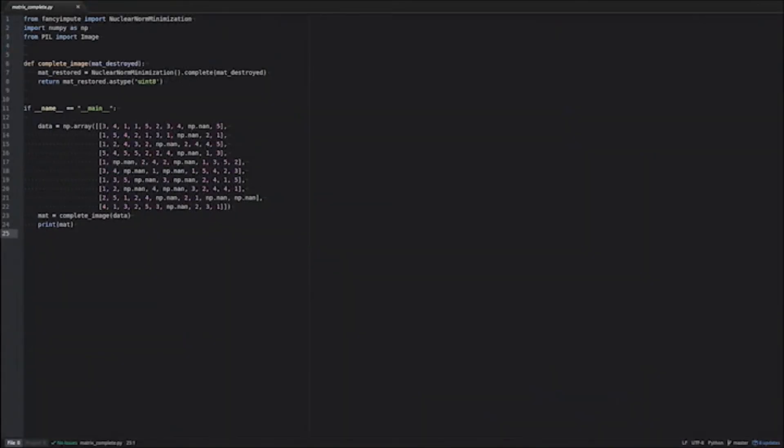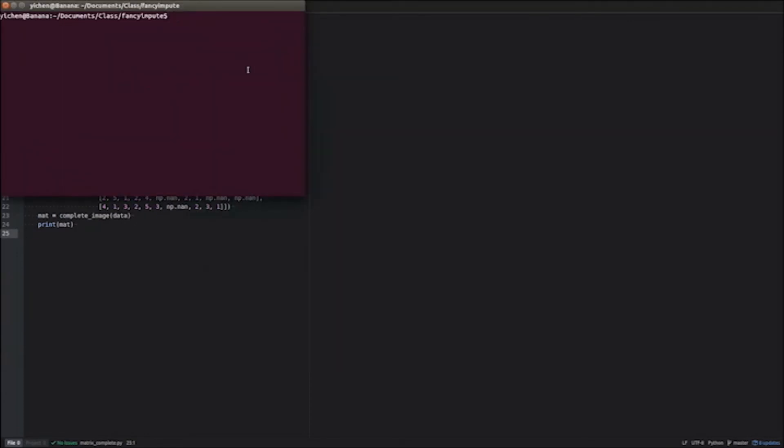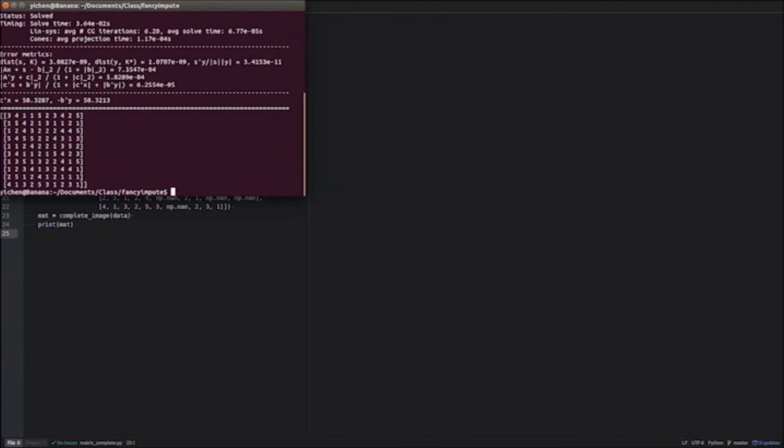And here is our matrix, the movie rating matrix in Python numpy format. And we run the script that we wrote for this particular matrix. And if you wait a while, then the matrix will be completed as a result. And that's how we came up with our matrix in the appendix of our paper.